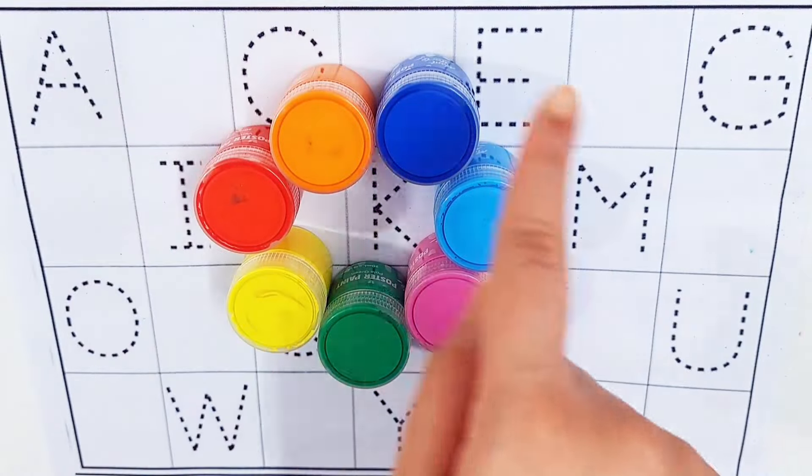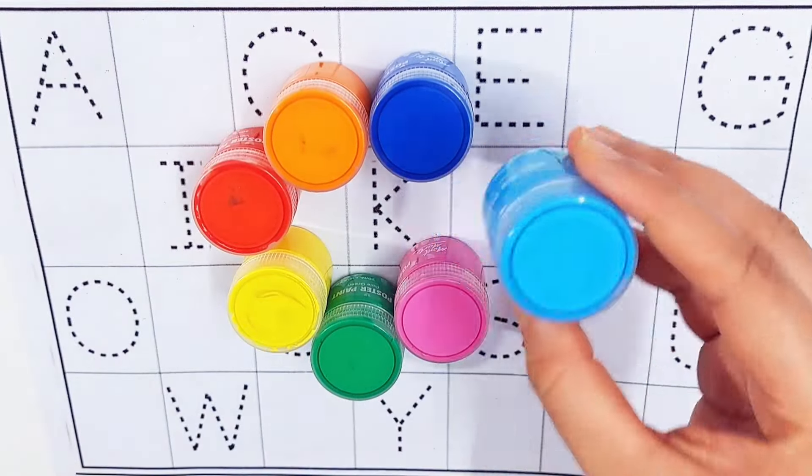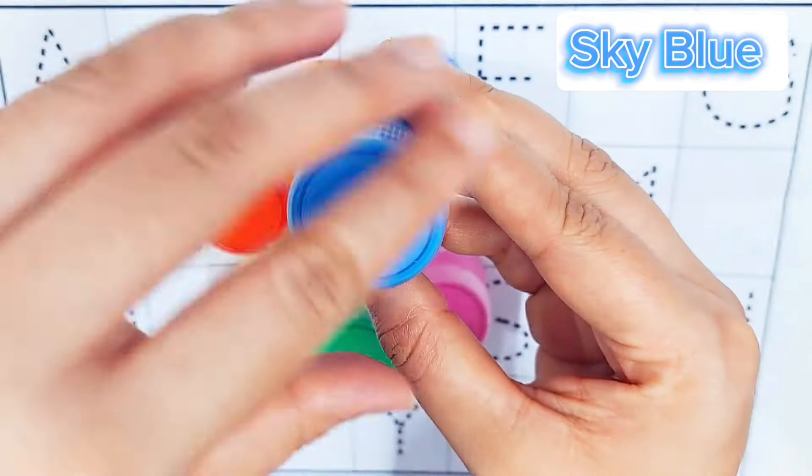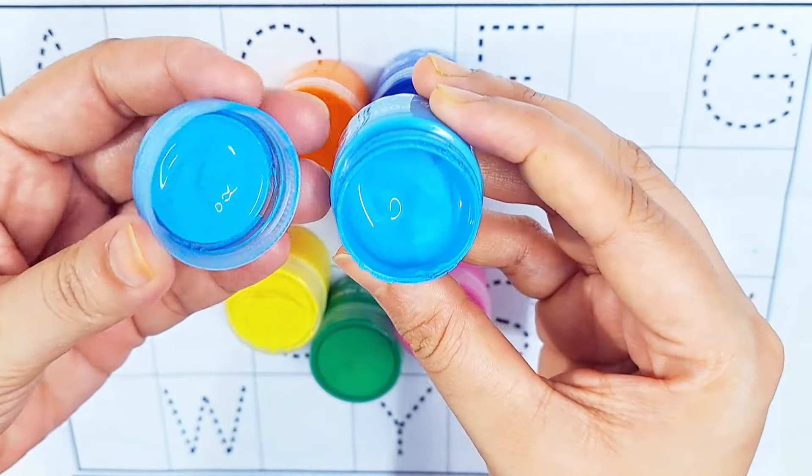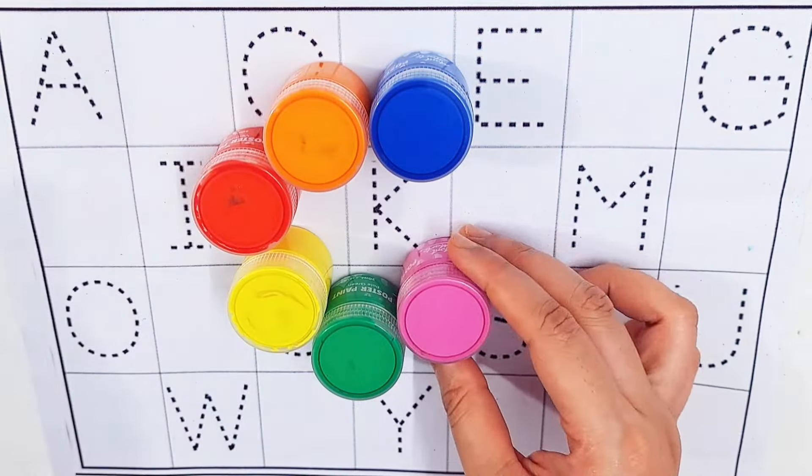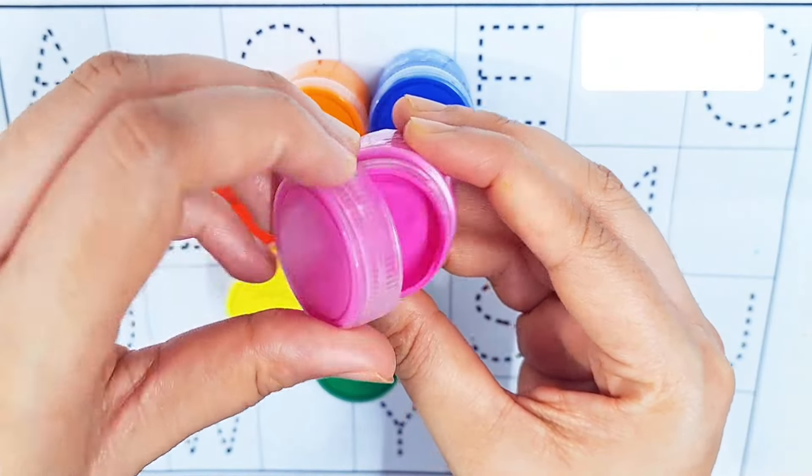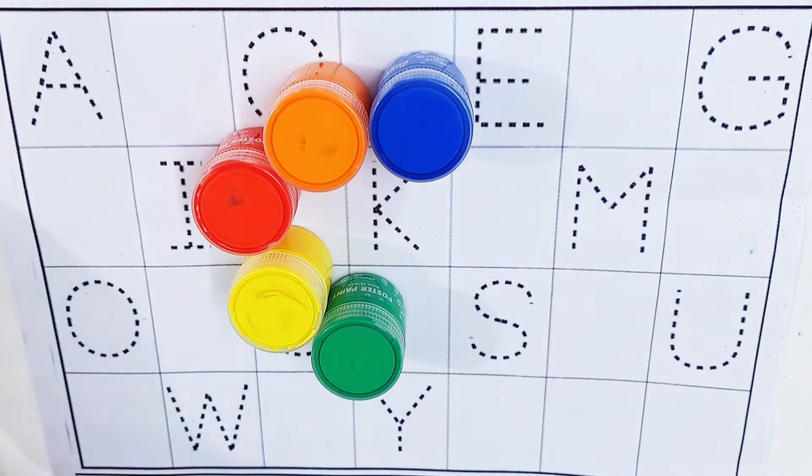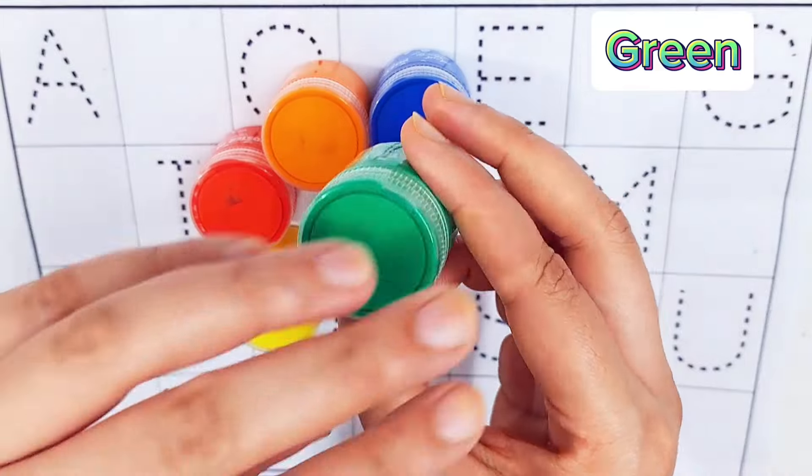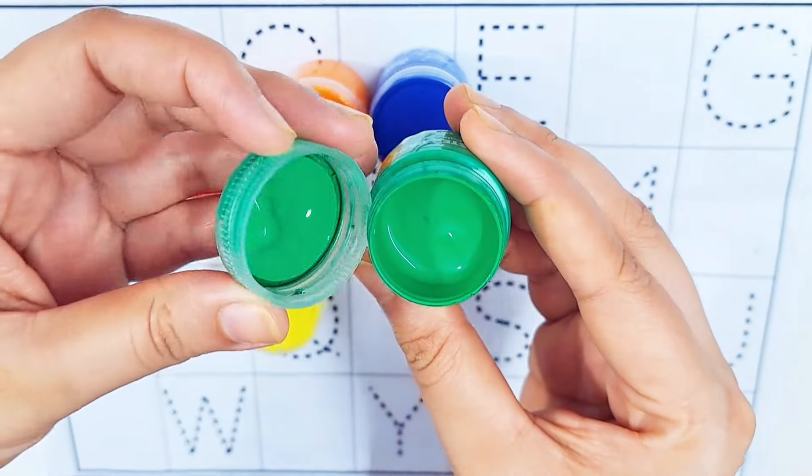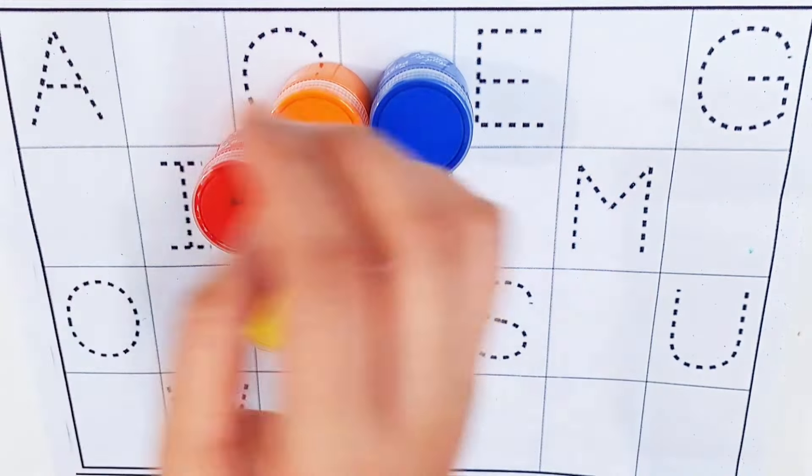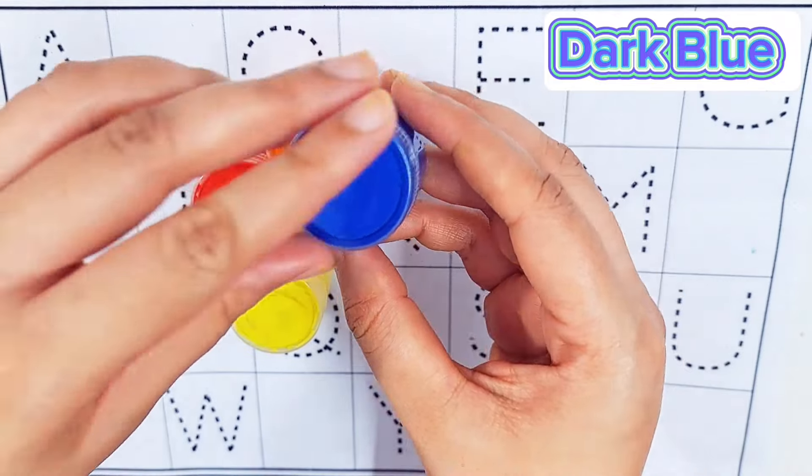Hello guys. Let's learn some colors name. Sky blue color. Purple color. Green color. Dark blue color.